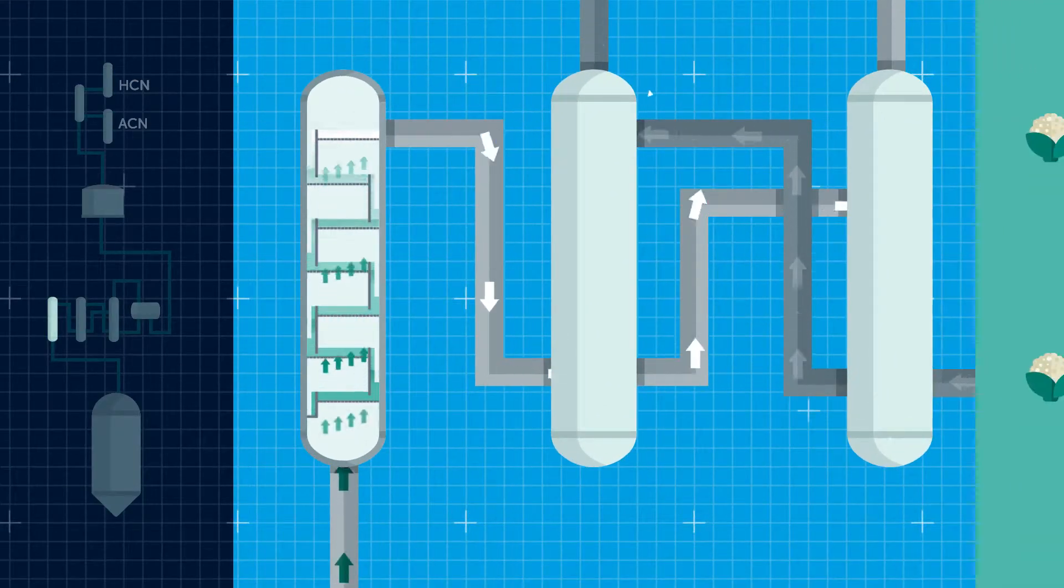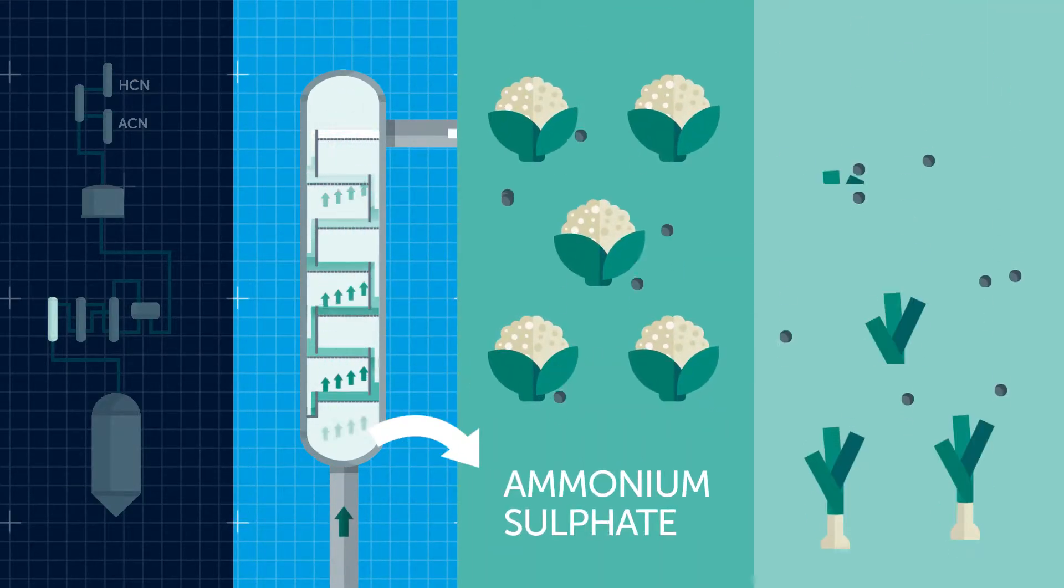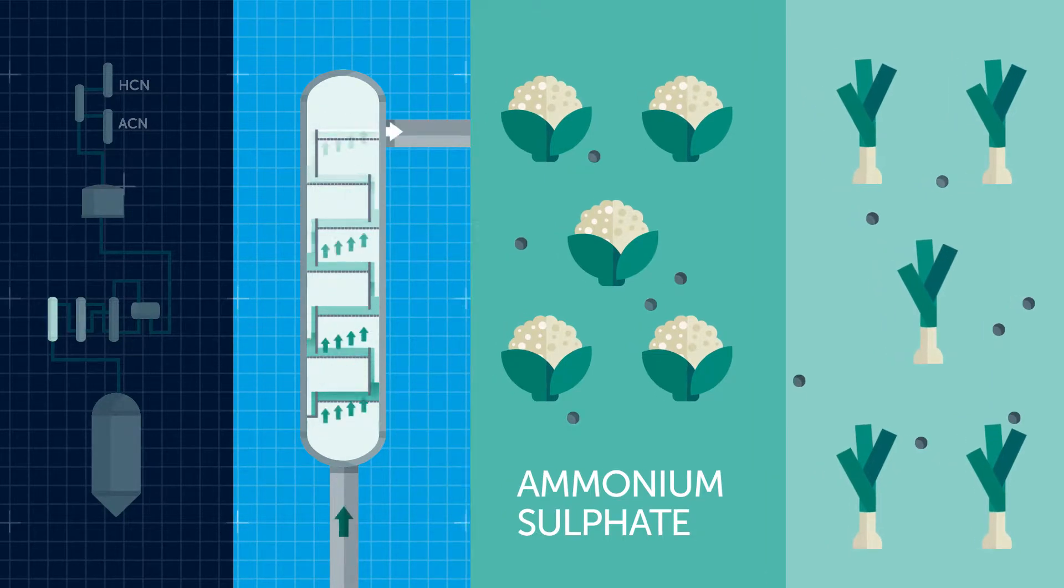The first compound to be extracted is ammonium sulfate, which is primarily used in the production of fertilizers.